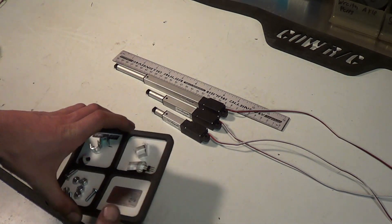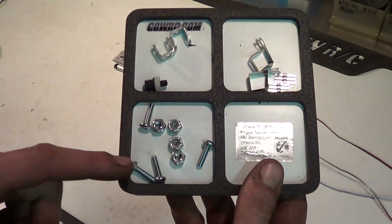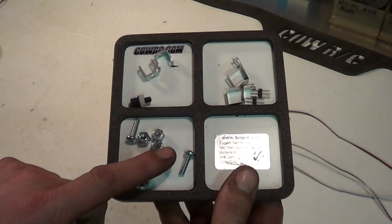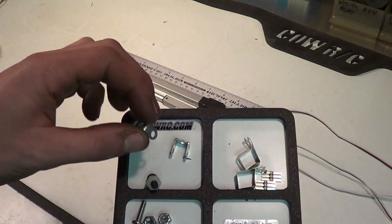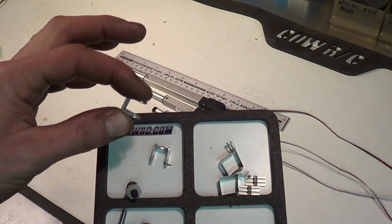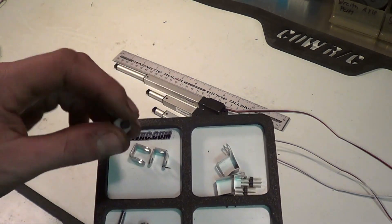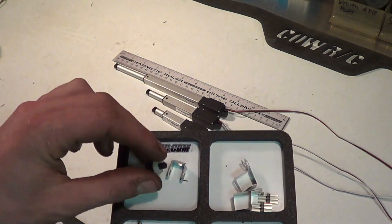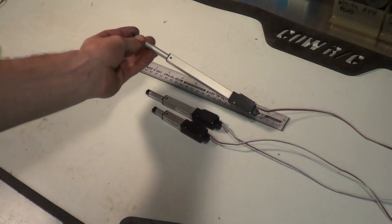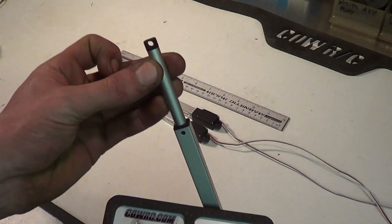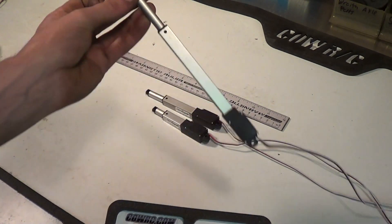They come with four screws and nuts, two little mounting clevises, and a different end for the end of the cylinder which can be changed from the end with just the hole in it.